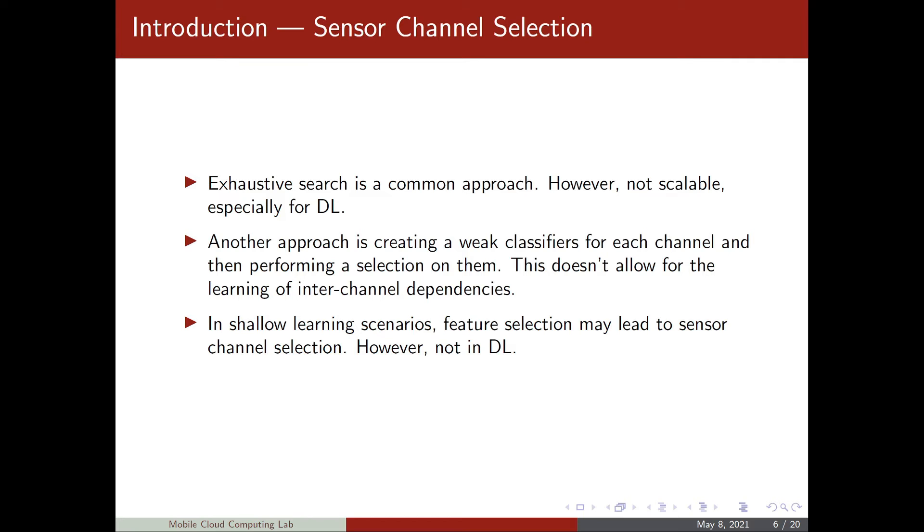Exhaustive search is not an efficient way of performing sensor channel selection. Another approach is by creating several weak classifiers, each weak classifier for a sensor channel, and then performing a classifier selection. But by doing this, it doesn't allow for inter-channel dependencies learning, which means that features that come from relationship among sensor channels are not learned.